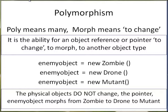Physical objects do not change. I cannot have the same object be three different things. But I can have one variable, enemy object, morph between three different objects: zombie, drone, and mutant.